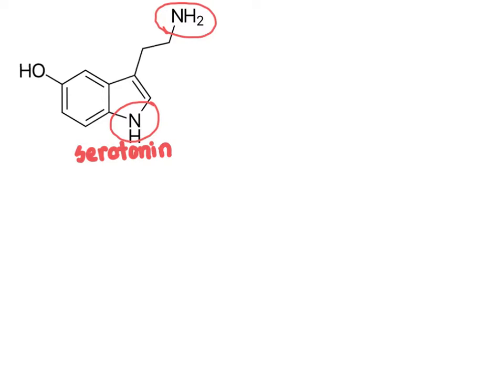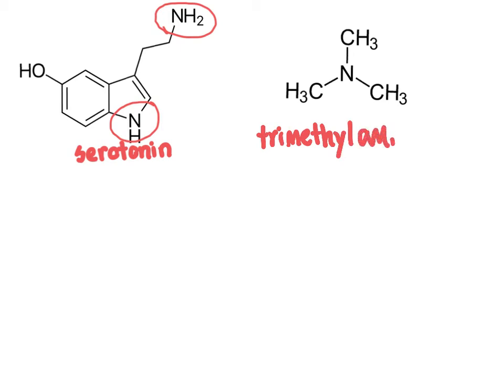Another interesting example of an amine group is trimethylamine. This is a really small molecule that literally can make a big stink. When fish decompose, the amino acids present within the fish decompose and release trimethylamine, which has a very strong, stinky odor responsible for much of what we smell when we smell decaying fish. The amine group here is the nitrogen atom directly connected to those three methyl groups.